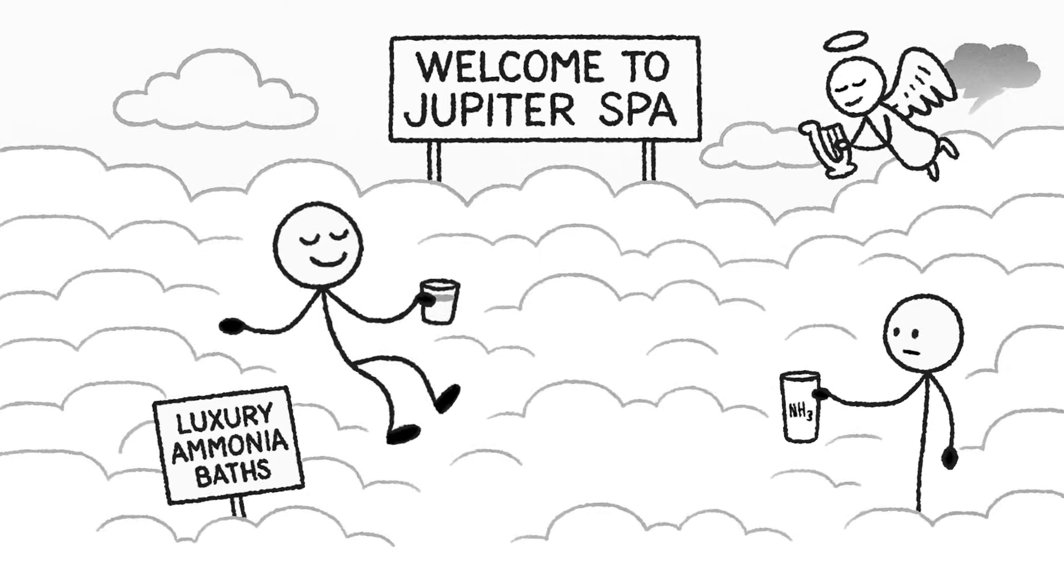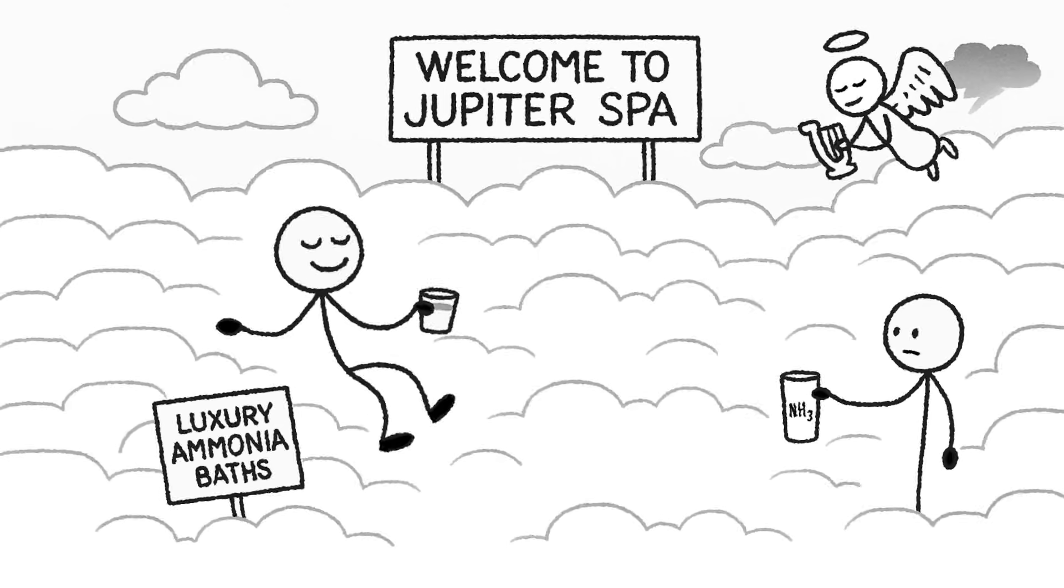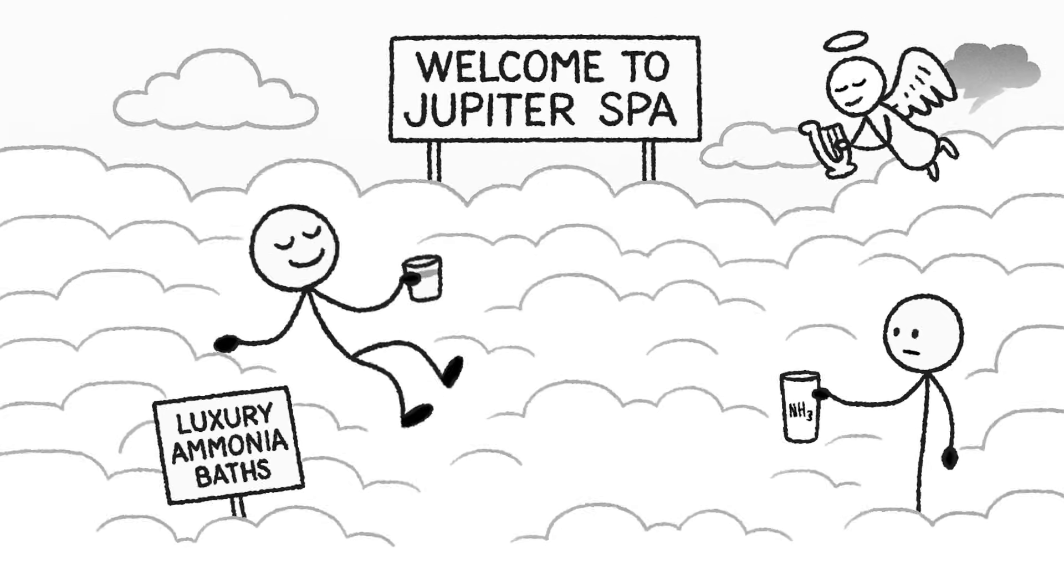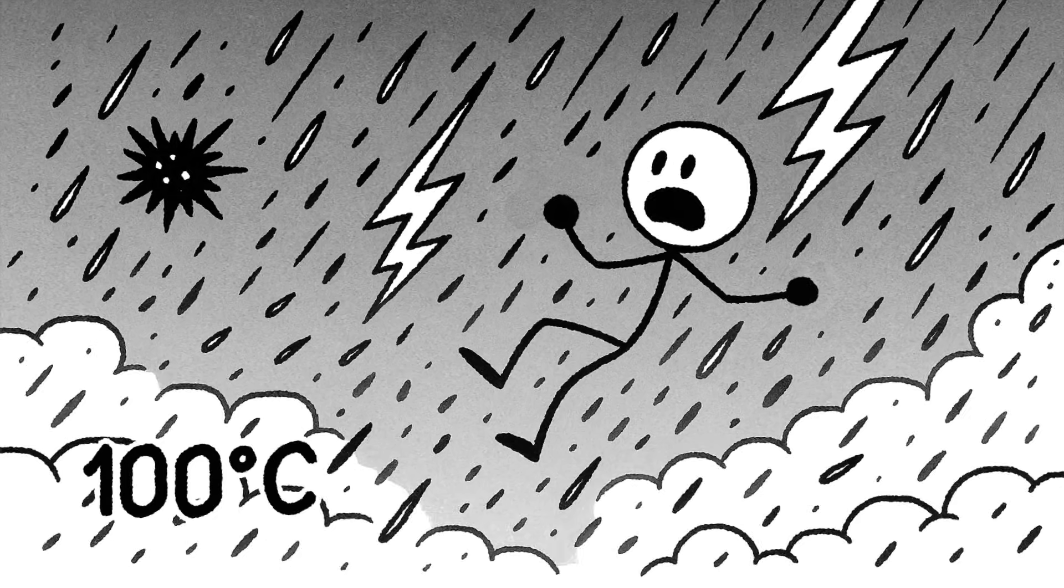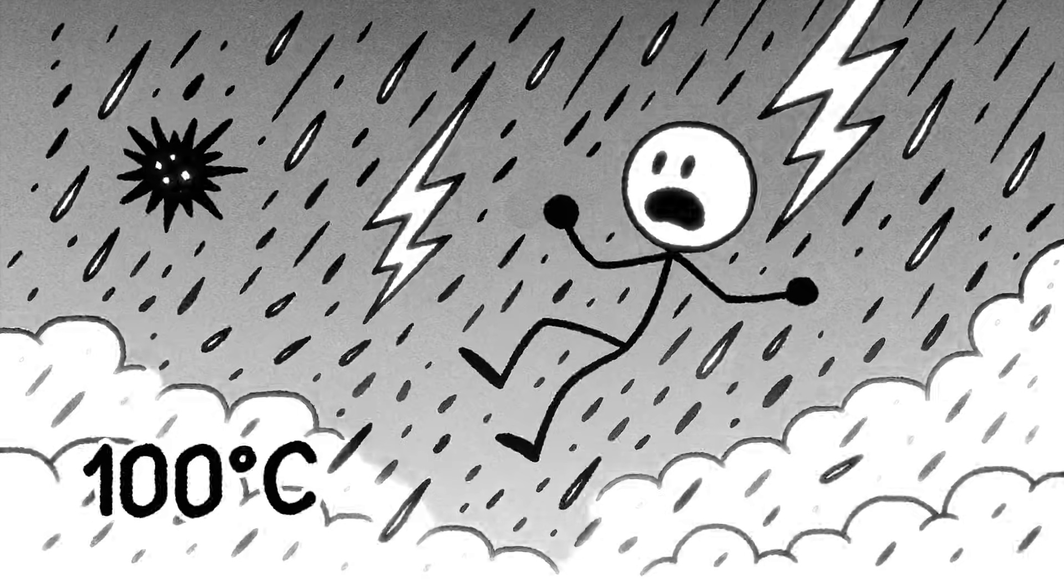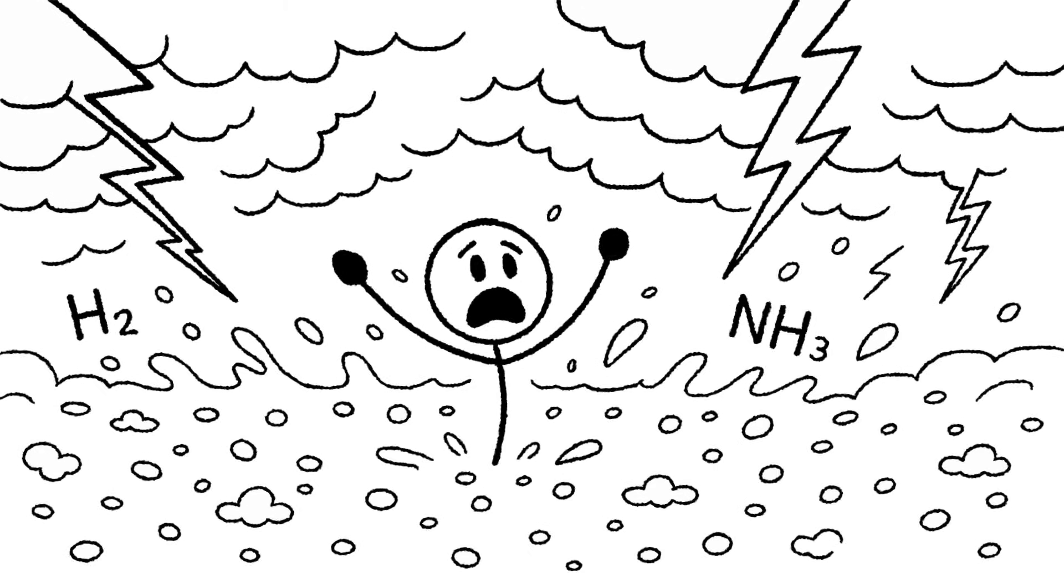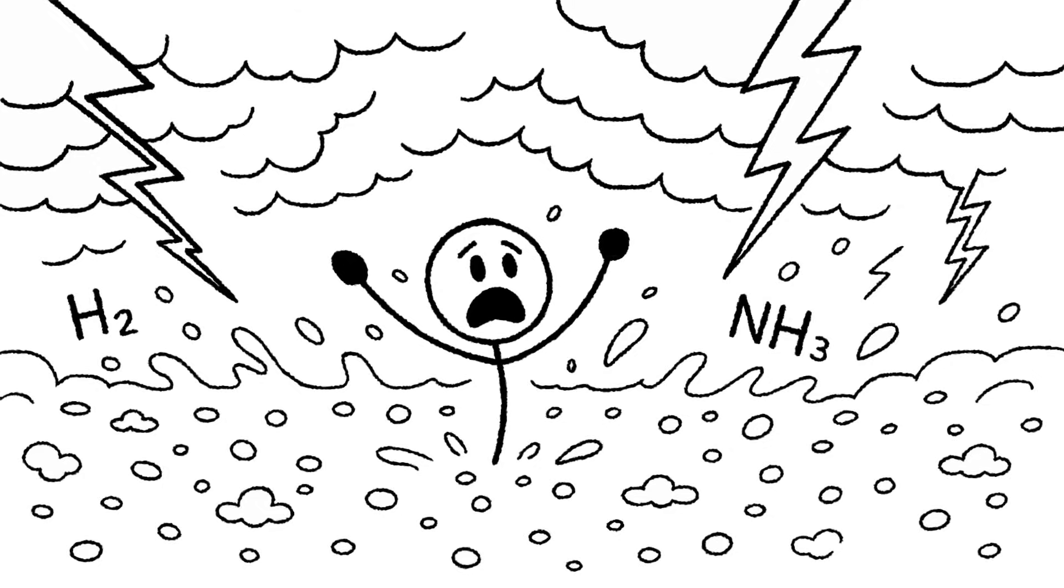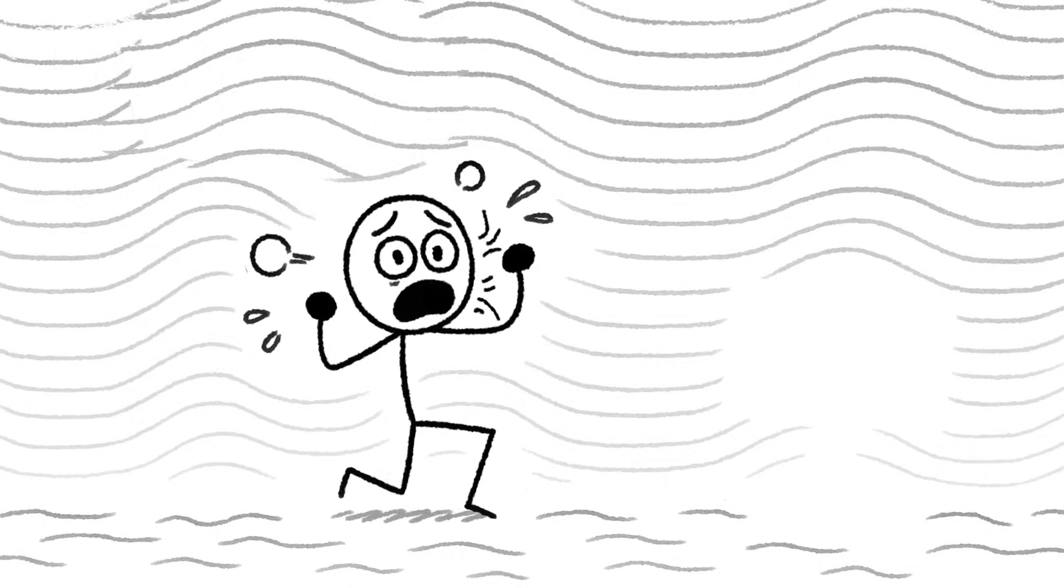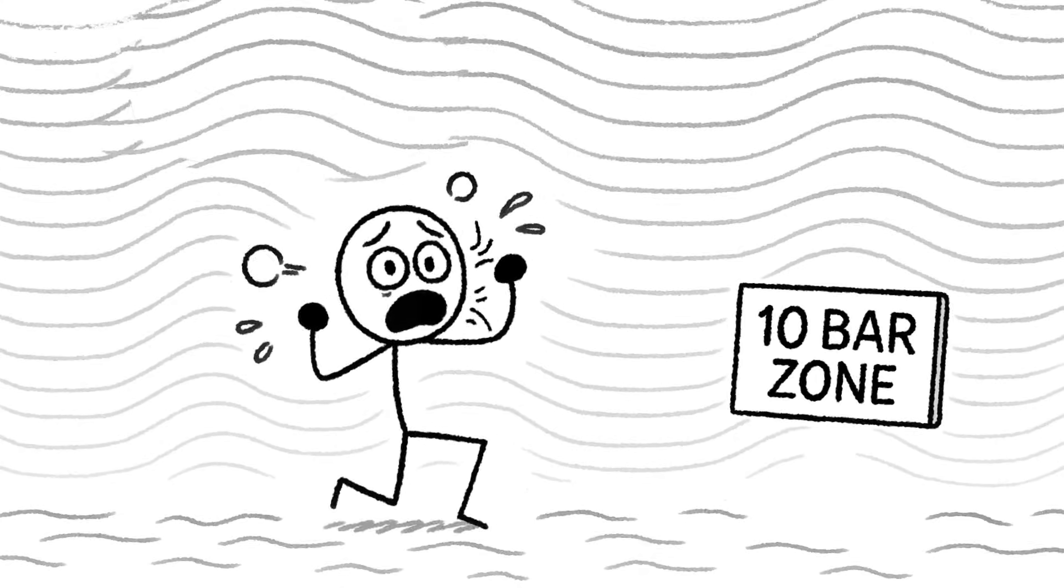If by some miracle, or sheer plot armor, Jeff's incineration is delayed, he passes through Jupiter's famous cloud layers. Sounds dreamy, right? Wrong. These clouds are pure nightmare fuel. Ammonia crystals, ammonium hydrosulfide, and steam-hot water vapor. It's like diving into a boiling vat of chemical soup during a lightning storm in an earthquake. The temperature? Over 100 degrees Celsius and climbing. And the pressure? Around 10 bars. That is 10 times what we experience at sea level here on Earth.